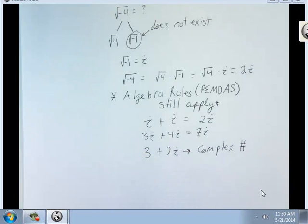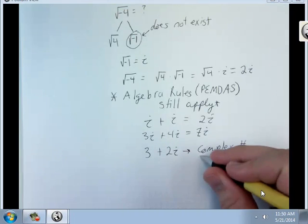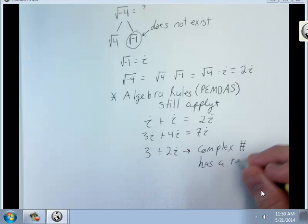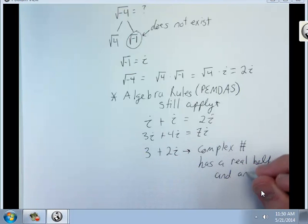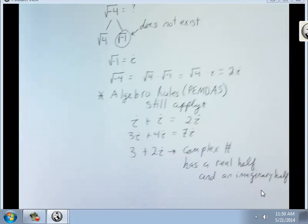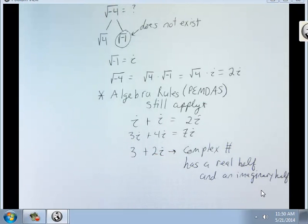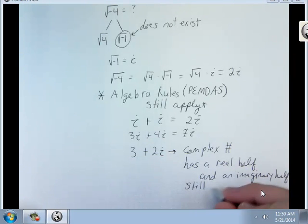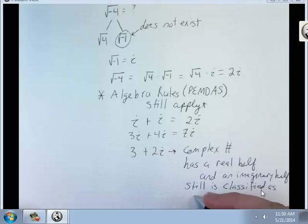This is called a complex number. A complex number has a real half and an imaginary half. If we're talking about our classifications from the very first video, it's still classified as imaginary.